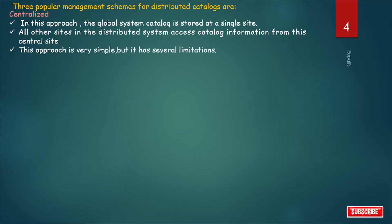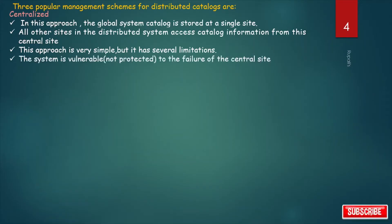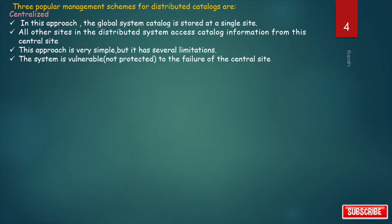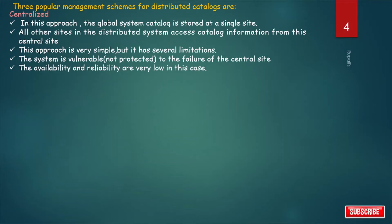This approach is very simple, but it has some limitations. The system is vulnerable because the global system catalog is stored at only one single site. If a failure of the central site occurs, we cannot retrieve any information. So availability and reliability are very low in this approach.